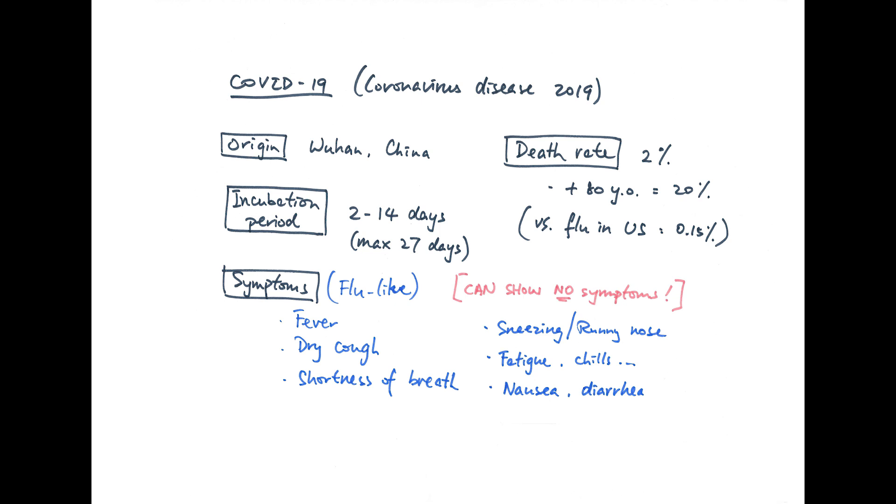Compared to the death rate of flu in the states, which is about 0.15%, you can really see the seriousness of COVID-19. On that note, let's look at some statistics.